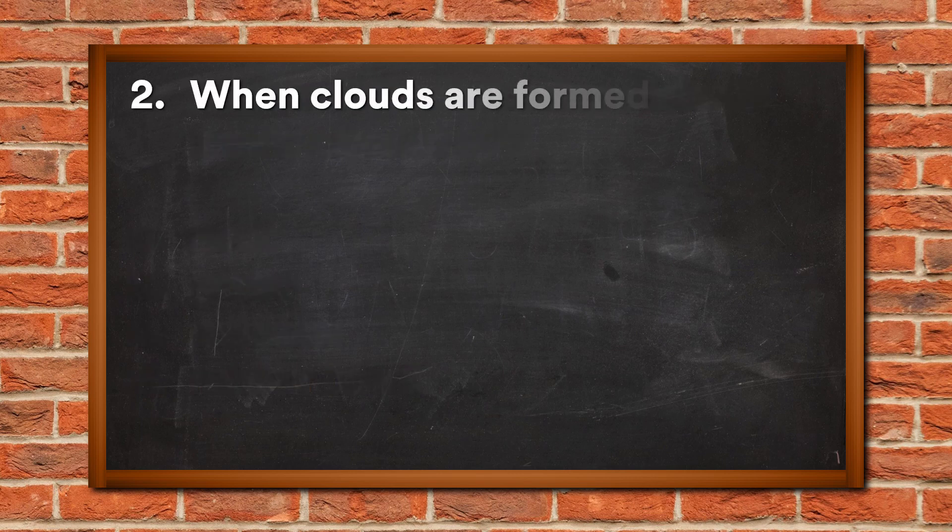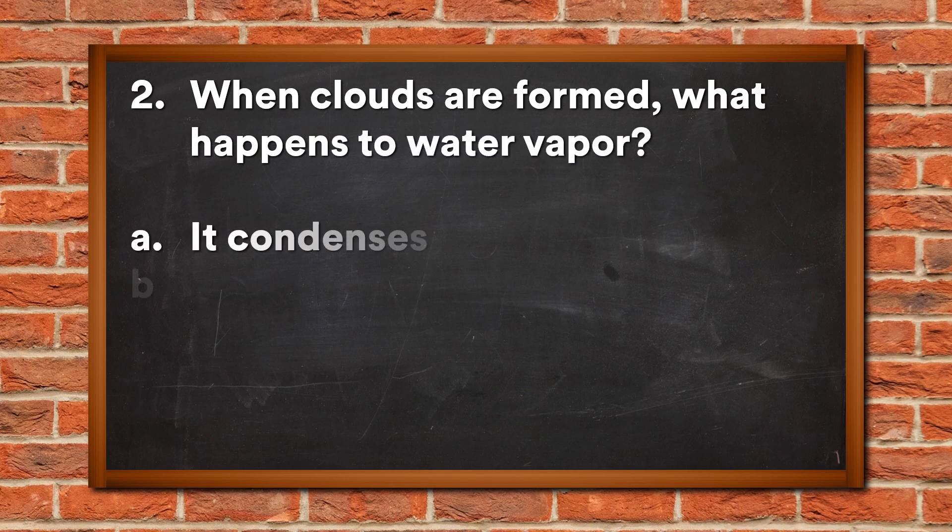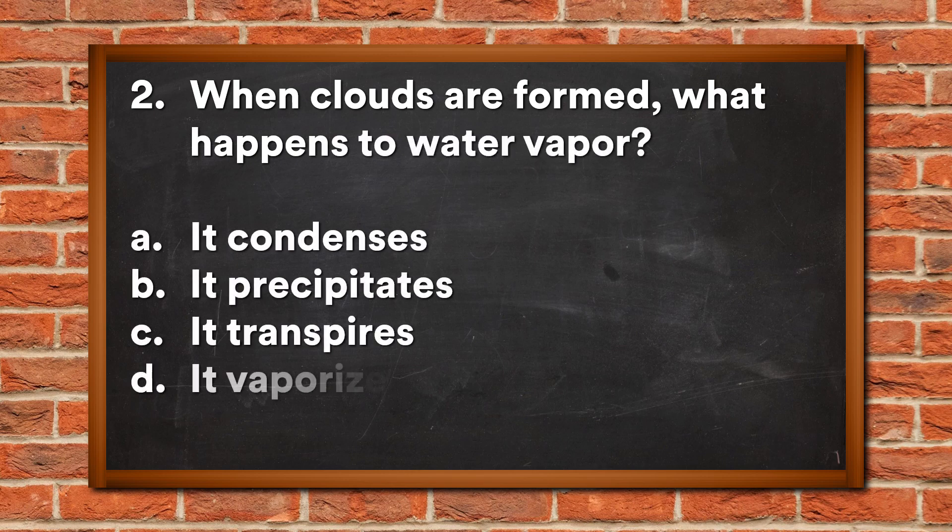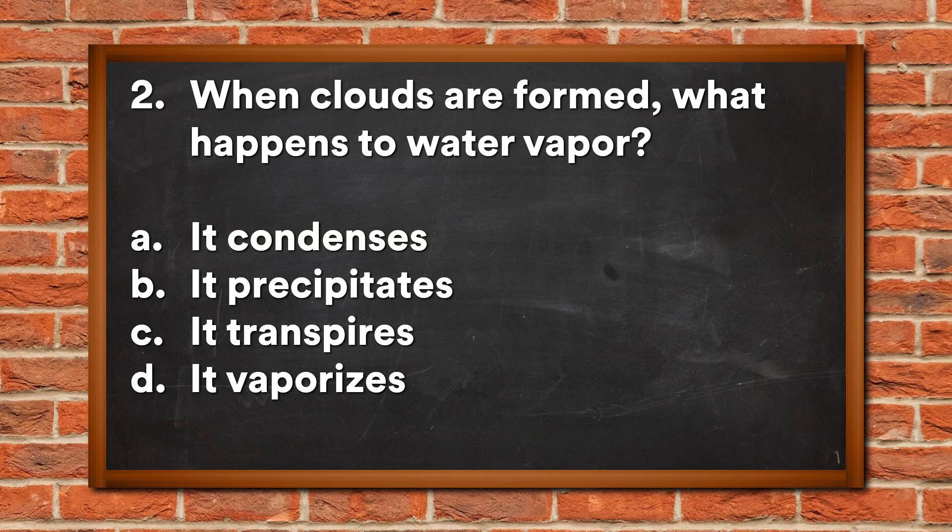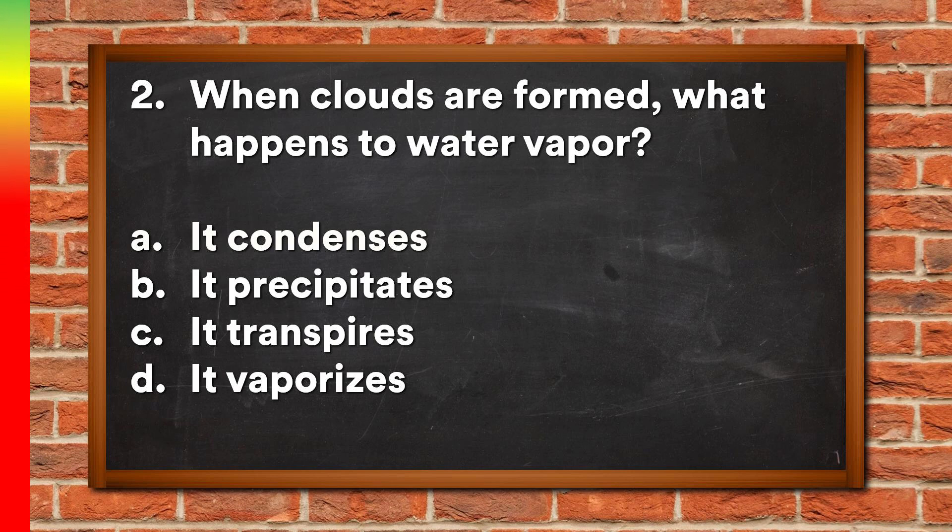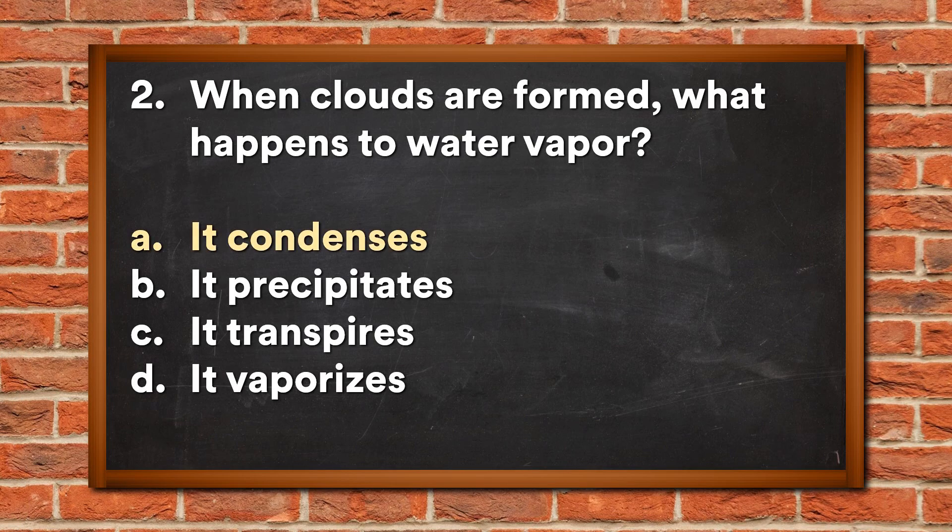Question 2: When clouds are formed, what happens to water vapor? A. It condenses, B. It precipitates, C. It transpires, D. It vaporizes. The answer is A, it condenses.